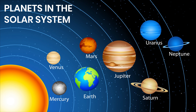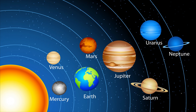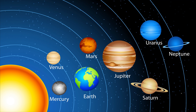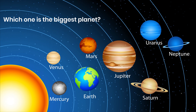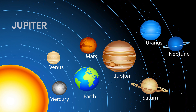Planets in the solar system: there are eight planets in the solar system — Mercury, Venus, Earth, Mars, Jupiter, Saturn, Uranus, and Neptune — in order from closest to furthest from the sun. Which one is the nearest planet to the sun? Mercury. Which one is the biggest planet? Jupiter. And which planet has a ring? Saturn.